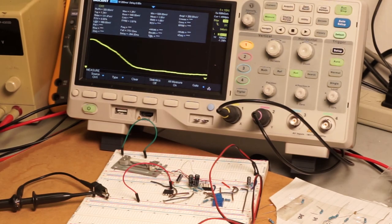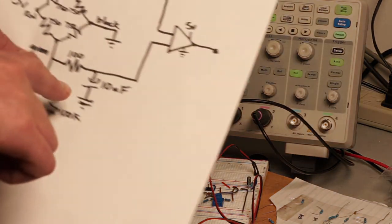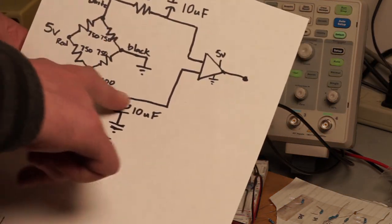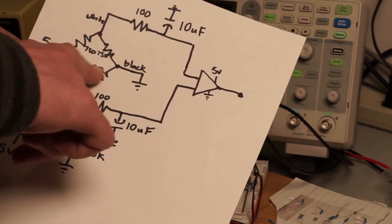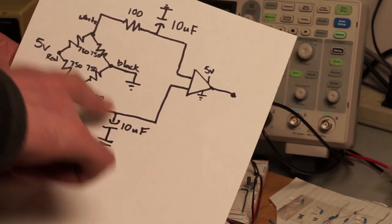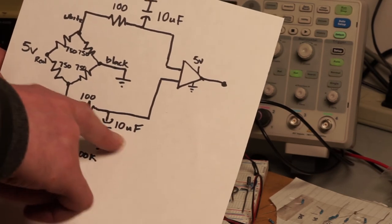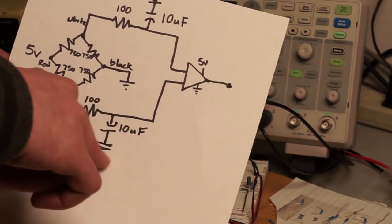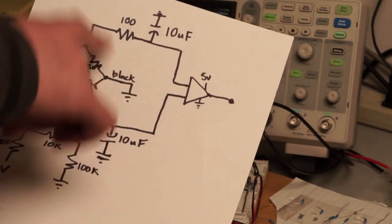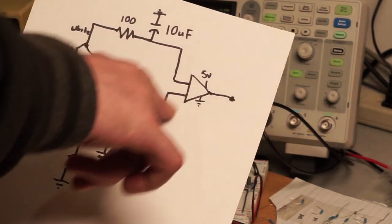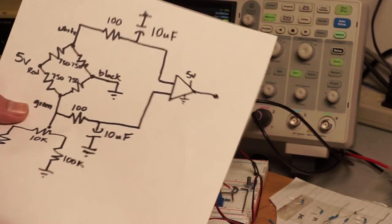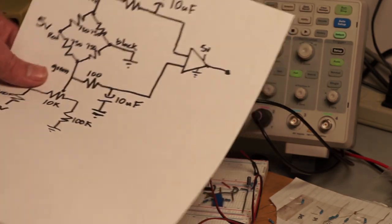And in addition to that, I added some low-pass filtering to the outside of the strain gauges. This 100 ohm and 10 microfarad capacitor creates an RC low-pass filter. Did it on both sides, on the incoming side of the op amp. And that seemed to work okay.